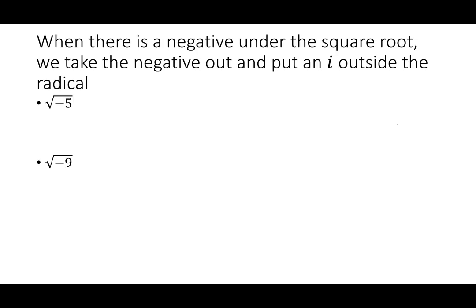Anytime there's a negative under the square root, we are going to take that negative out, and in its place, we are going to put an i outside of the radical. For example, the square root of negative 5 can be written as the square root of 5 times the square root of negative 1. Anytime I see the square root of negative 1, that turns into an i — so the i is outside the radical, not underneath it, and I no longer have a negative.